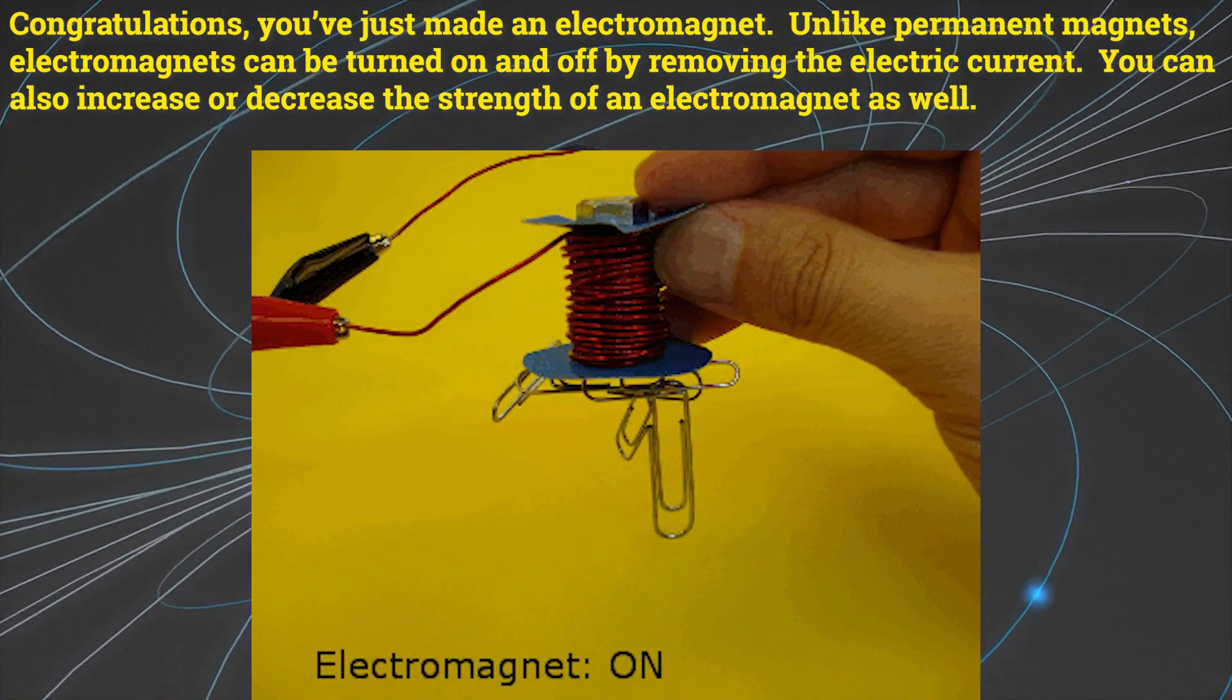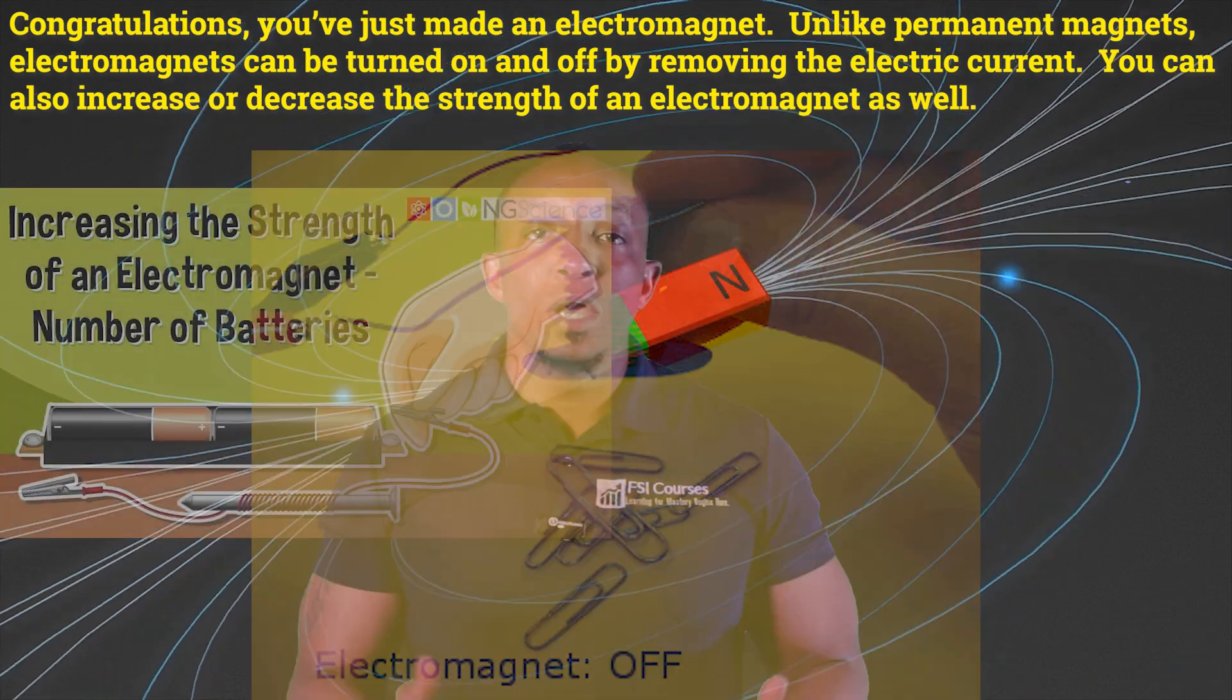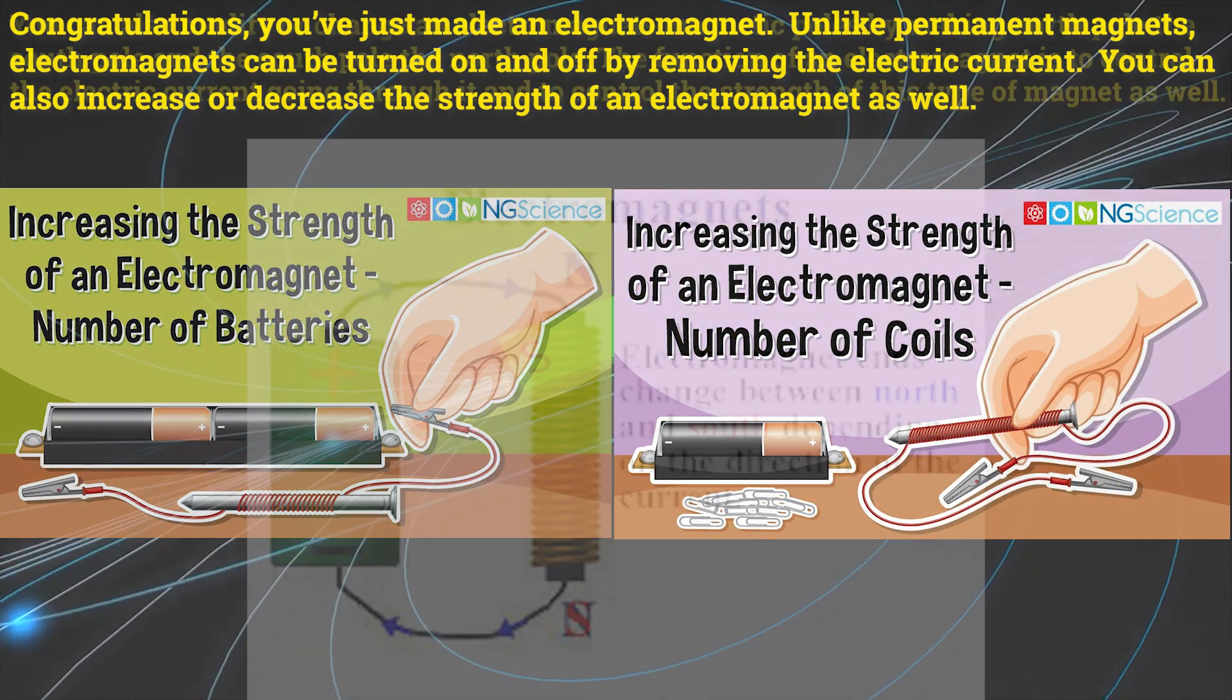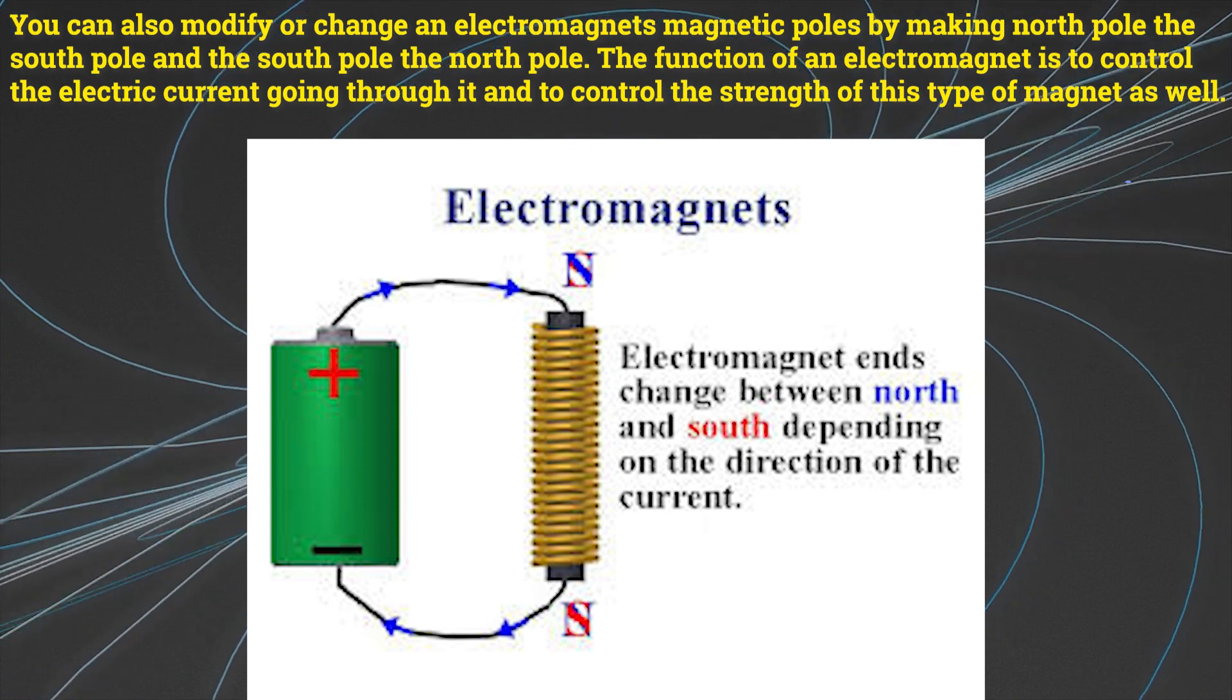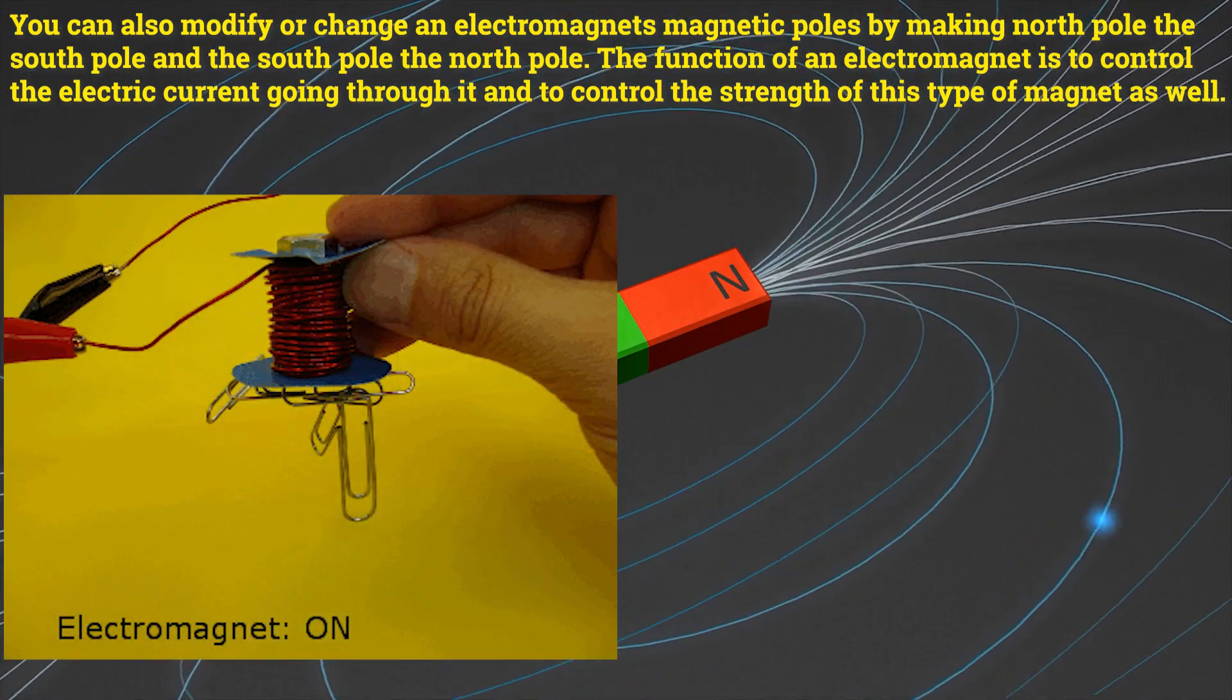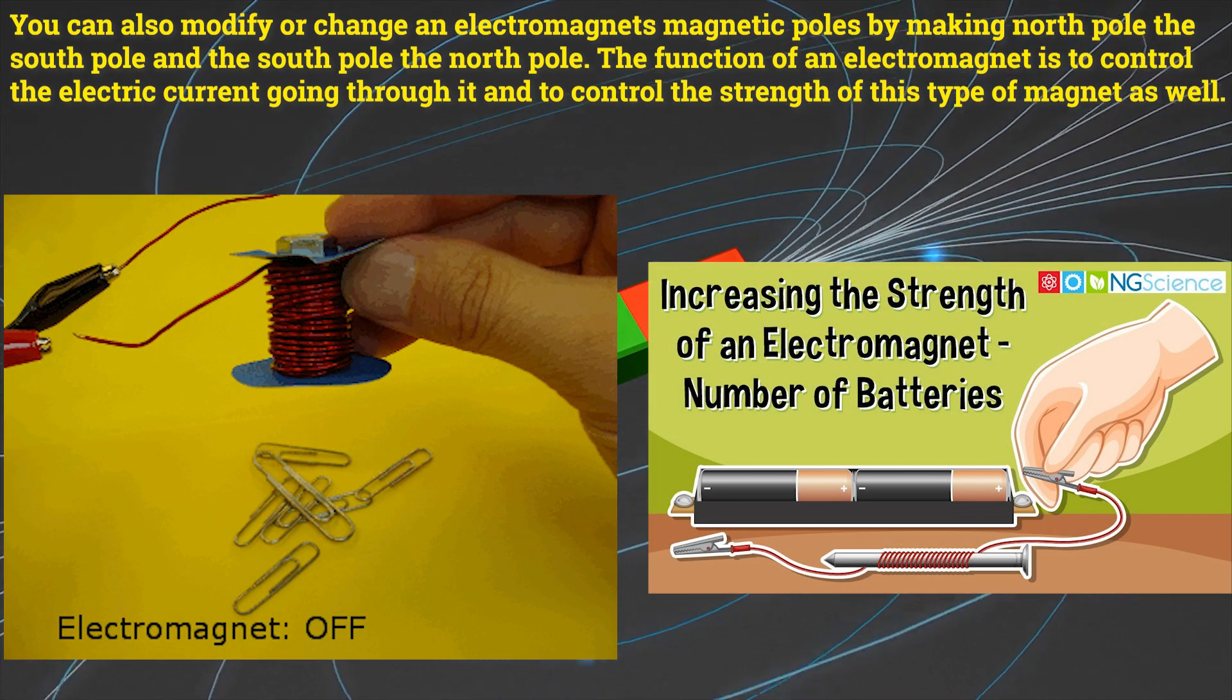Unlike permanent magnets, electromagnets can be turned on and off by removing the electric current. You can also increase or decrease the strength of an electromagnet as well. You can also modify or change an electromagnet's magnetic poles by making the north pole the south pole and making the south pole the north pole. The function of an electromagnet is to control the electric current through it and to control the strength of the type of magnet as well.